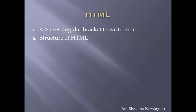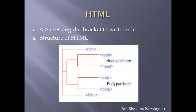HTML code is written inside angular brackets. Angular brackets are used to specify the code for web page programming. The structure of HTML begins with a header part. Just as in programming languages we use a header section, we start with the HTML opening tag, written inside angular brackets — this is called the opening tag.